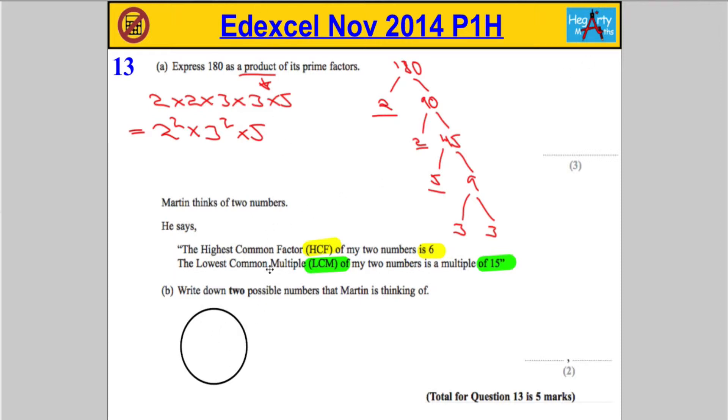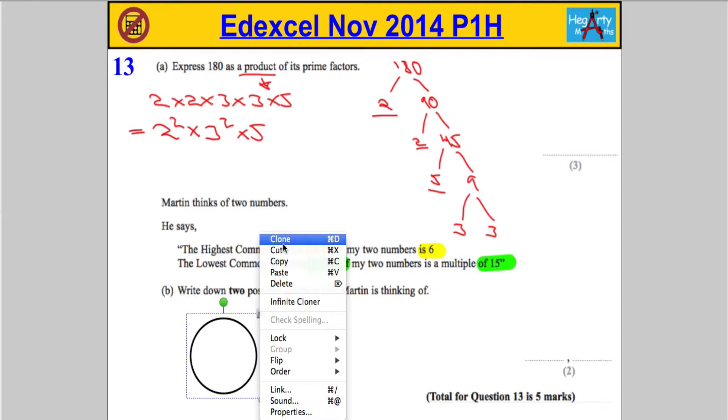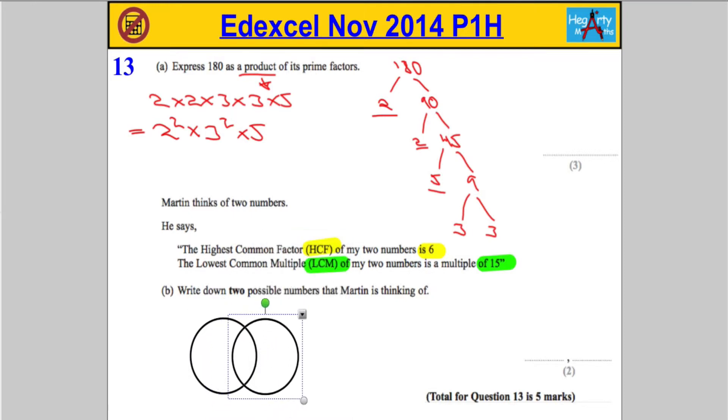Hopefully, you've seen this way of doing prime factors and HCFs and things like that. With the Venn diagram method, normally, the HCF of the two numbers is found by multiplying everything in here.